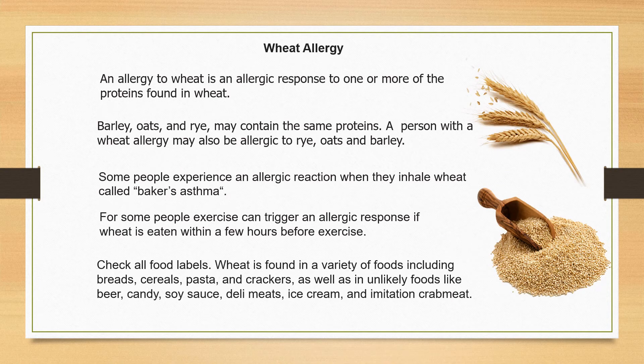Wheat allergy: if you have an allergic reaction to wheat, it may be because of the protein gluten, but there are other proteins in wheat that can cause allergic reactions. Barley, oats, and rice may also contain some of these proteins. Some people have an allergic reaction if they inhale wheat — it's called baker's asthma. Others can have an allergic reaction if they eat wheat a few hours before exercising. Make sure you check all your food labels and beware that beer, candy, soy sauce, deli meats, ice cream, and imitation crab meat can also contain wheat.